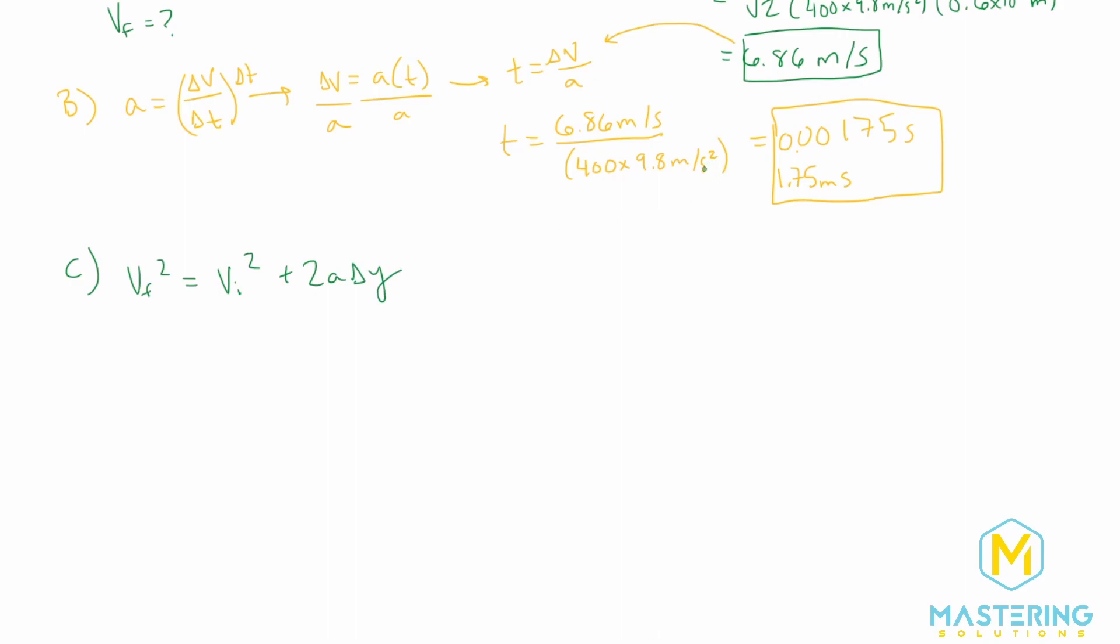We could use one that has t in it. In this case, we don't really need it. So I'm not going to worry about it. So we need to solve for the delta Y. So let's move over the initial velocity. And the final velocity is also zero.